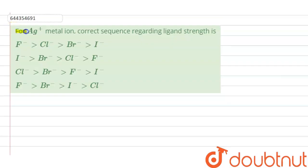The question is: for Ag plus ion, correct sequence regarding ligand strength is... So we have to determine the correct sequence regarding these halide ions. In all of the four options, we are given halide ions.